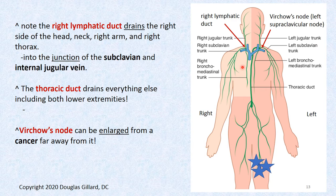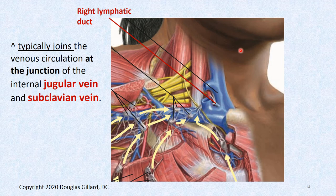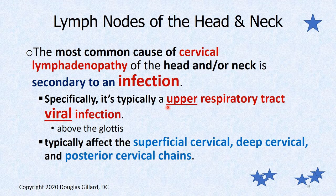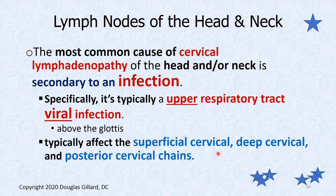The right lymphatic duct drains the right side of the chest and right side of the head, still coming in at the junction of the jugular and subclavian veins. The most common cause of cervical lymphadenopathy is an infection, usually a virus — an upper respiratory tract infection, meaning the bug has invaded above the level of the glottis. The superficial cervical, deep cervical, and posterior cervical chains are the ones usually affected by upper respiratory tract infections.